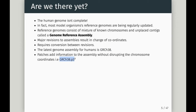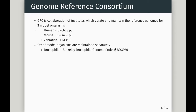It's these major revisions we really need to be concerned about. The GRC — the Genome Reference Consortium — deals with three major genomes: human, mouse, and zebrafish. They take responsibility for maintaining and making these genomes available. There are also other model organism genomes available: Drosophila is on the Berkeley Drosophila Genome Project, and mosquito genomes are at VectorBase.